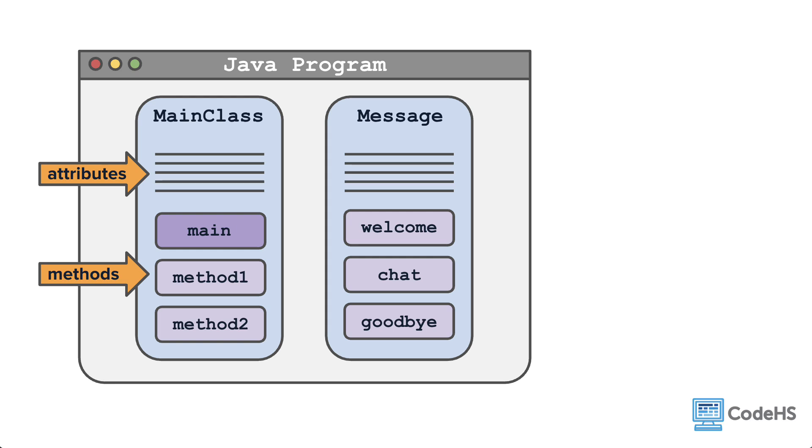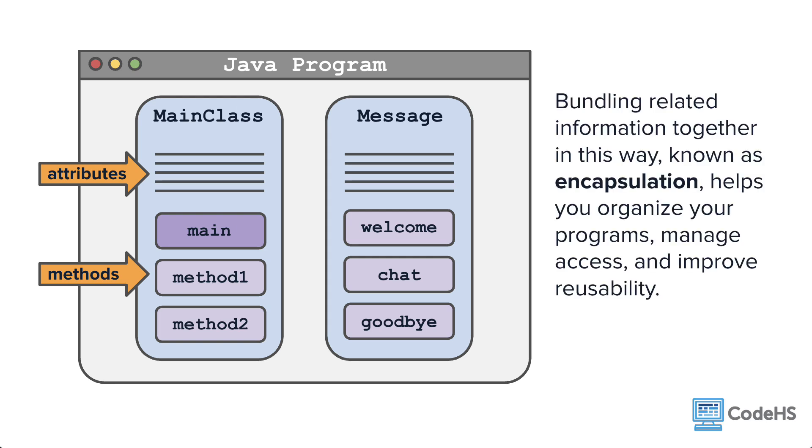At this point, you know that a Java program consists of classes that have related attributes and methods. Bundling related information together in this way, known as encapsulation, helps you organize your programs, manage access, and improve reusability.